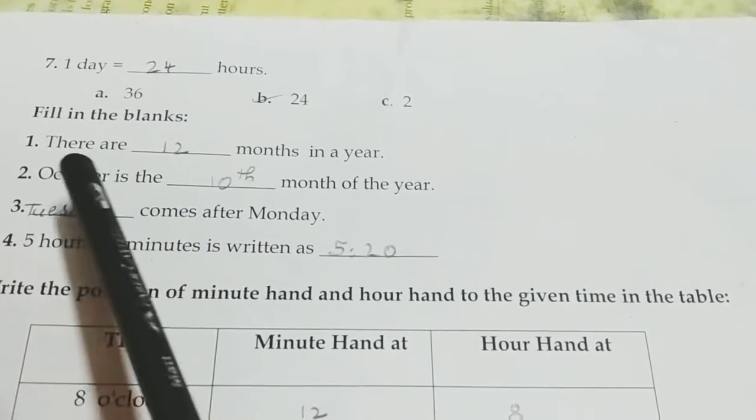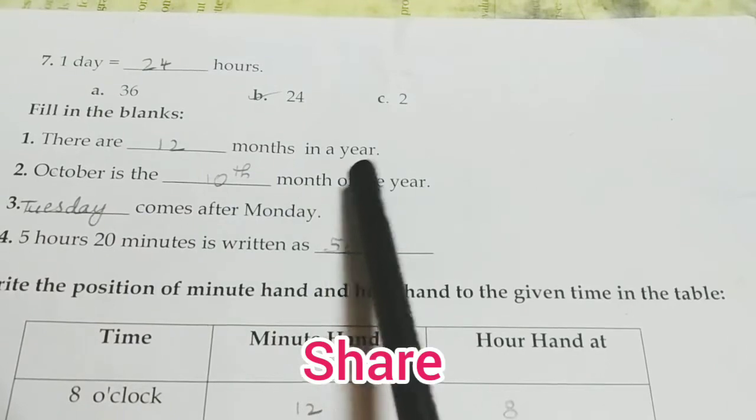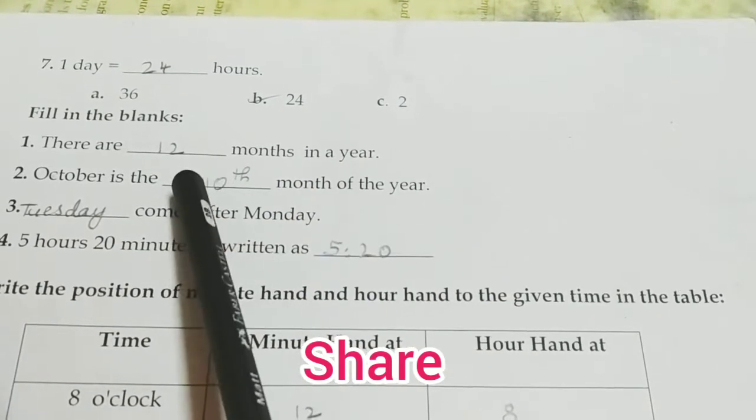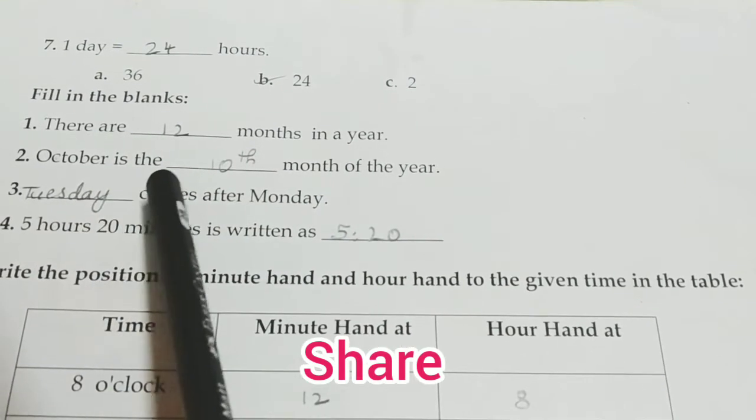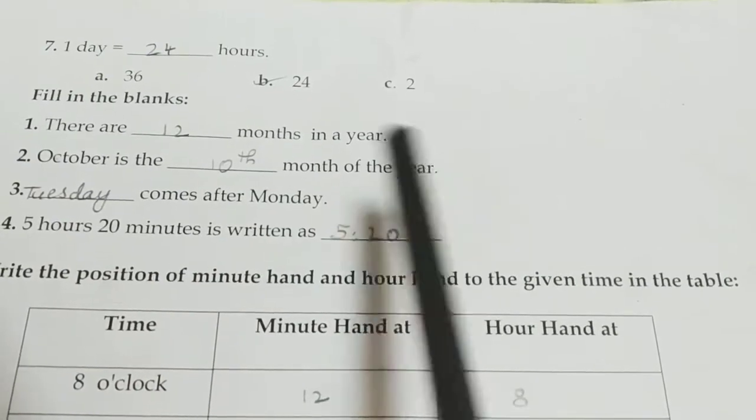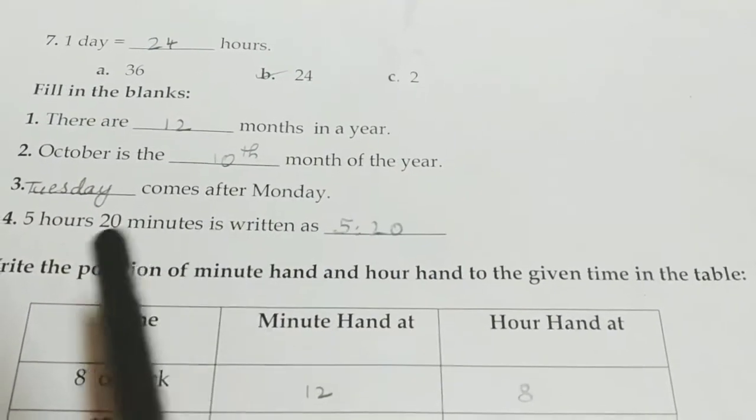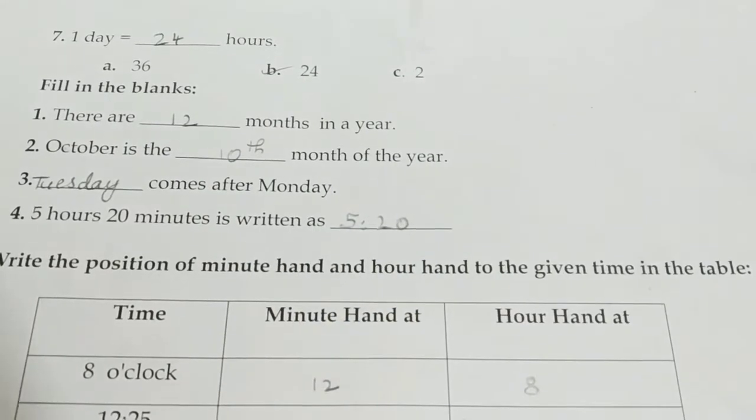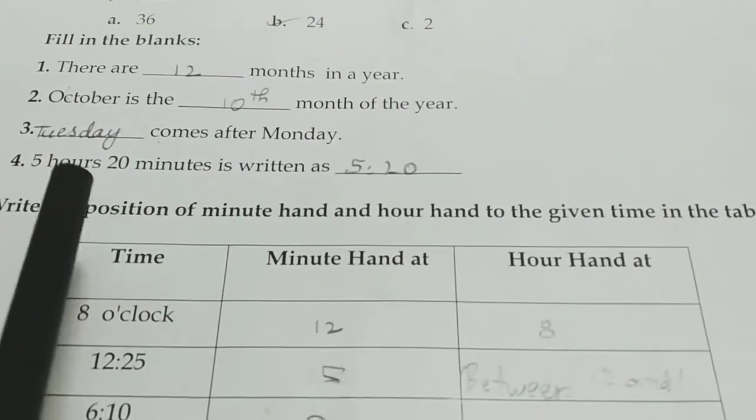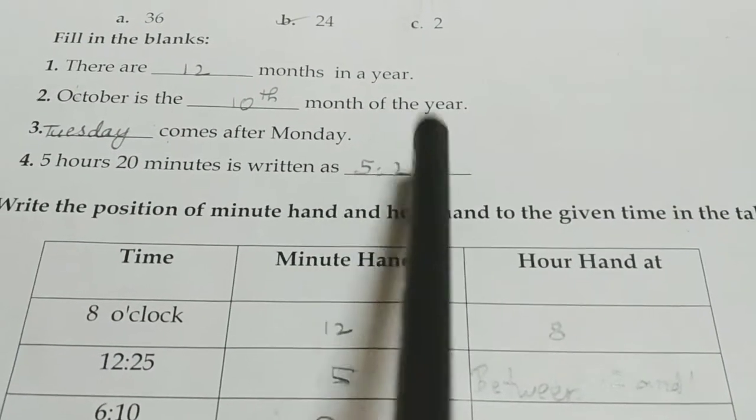Fill in the blanks. There are dash months in a year. In a year, we have 12 months. October is the dash month of the year. October is the 10th month of the year. Dash comes after Monday. Tuesday comes after Monday.